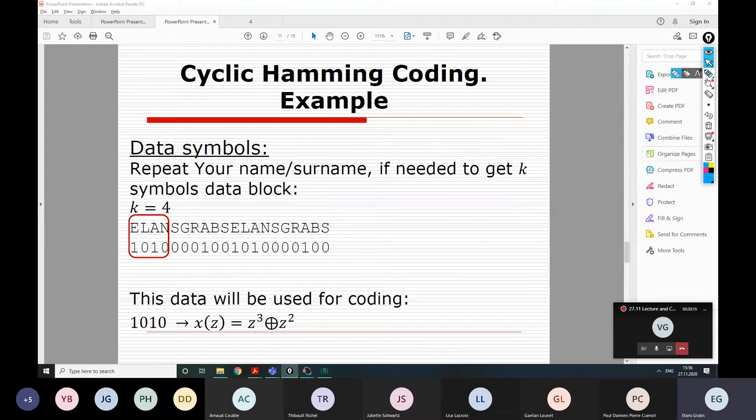After you have prepared that table, you need to select data block in the same way as that was done for group code, by converting your name and surname into binary data symbols. So, E, A, O, U, I and so on are 1, and other letters L, B, C, G, D and so on are 0. In my case, I have k equal to 4, but if you have k, for example, 25, then you can repeat your name and surname as long as you need in order to obtain those 25 symbols. That data will be used for coding.